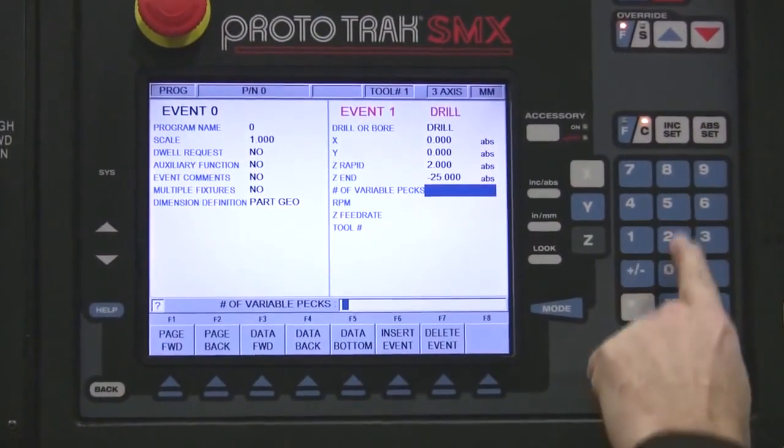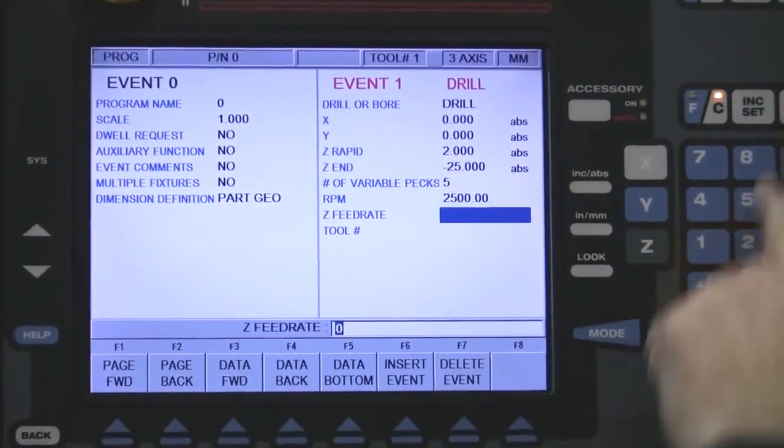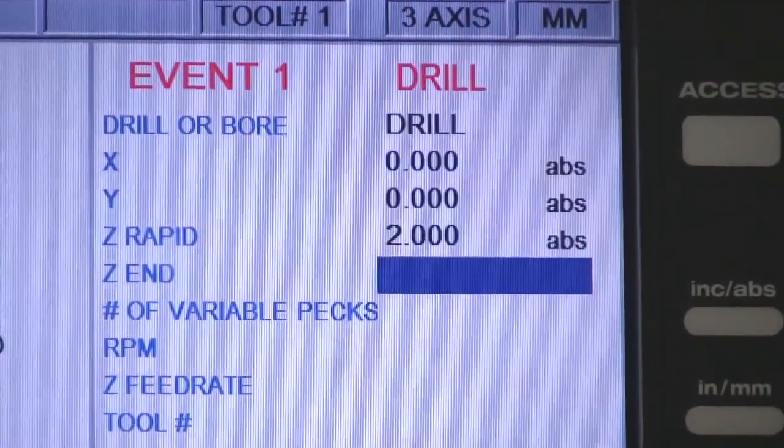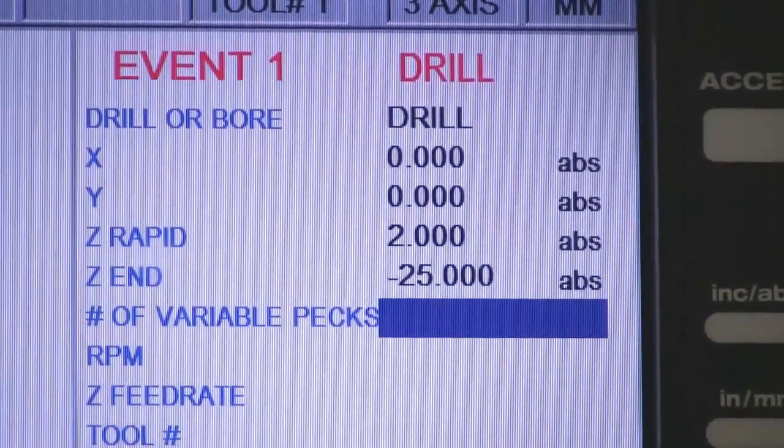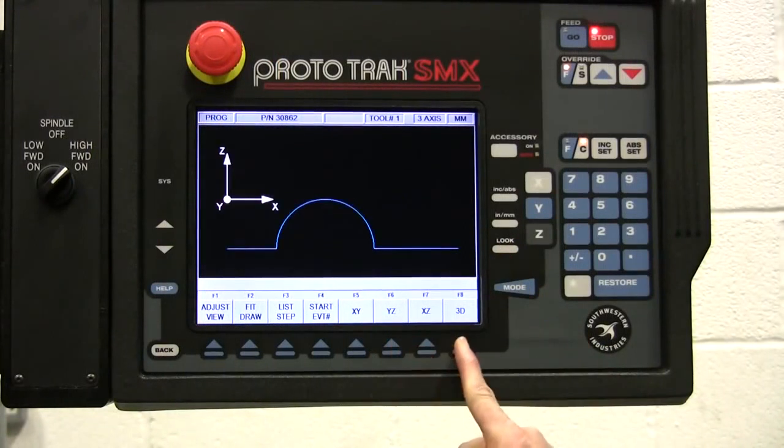Z-Rapid, Z-End, and the number of pecs. As always, this is done in plain, easy to understand English. Prototrack asks the questions, and if you know the value, the SMX does the rest. Check it with the look key, and that's now in there, ready to go.